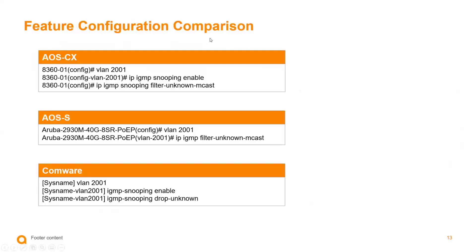For reference, here is a feature configuration comparison across platforms. On AOS-CX, the command is ip igmp snooping filter unknown-mcast for IPv4. The equivalent on AOS8 is ip igmp filter unknown-mcast — very similar syntax. On Comware, under VLAN 2001 with IGMP snooping enabled, the equivalent command is igmp snooping drop unknown.